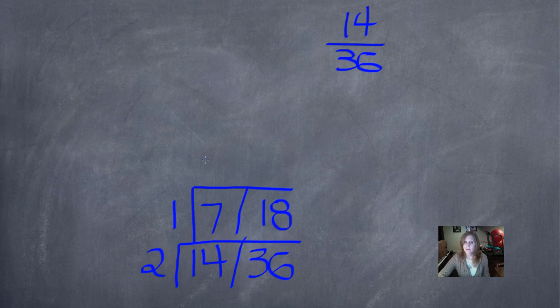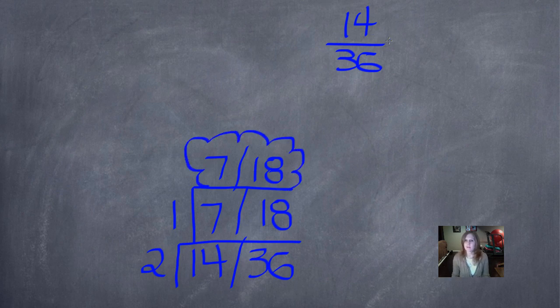1 goes into 7, 7 times. 1 goes into 18, 18 times. Remember, the bride and groom on top are my simplified fraction.